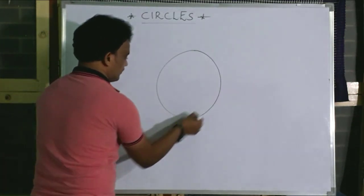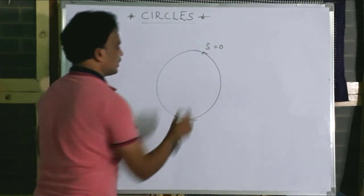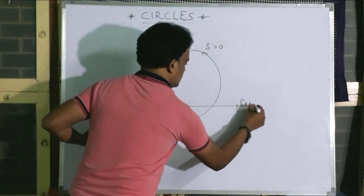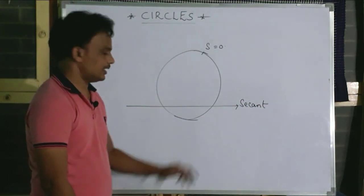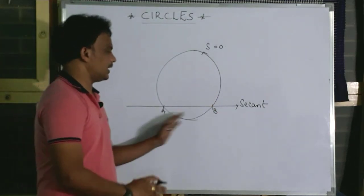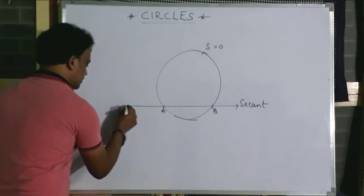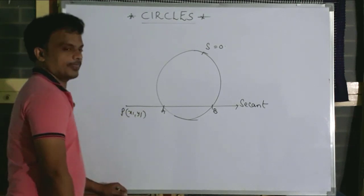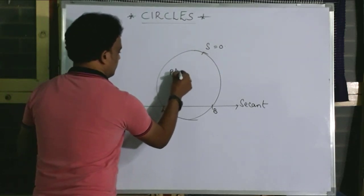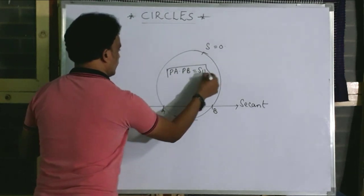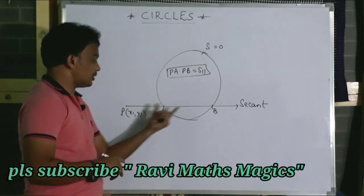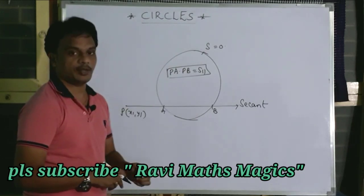Let us take a circle S equals to 0. For this point, I am going to take a line which is called a secant. The line which cuts the circle at two distinct points A and B is called the secant of a circle. Suppose the secant is passing through the point (x1, y1). Then the result I am going to prove is: PA into PB equals S11. PA and PB are the algebraic distances from the point P, and their product is S11.